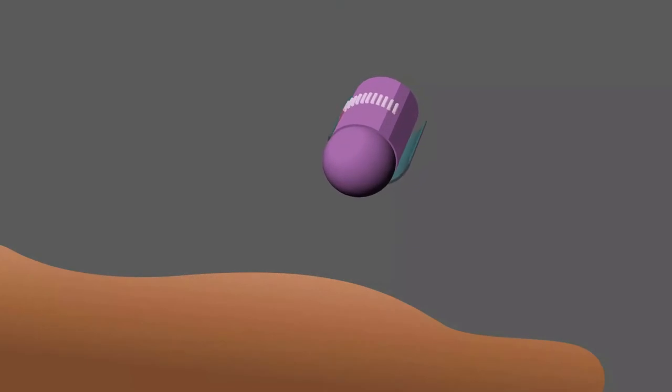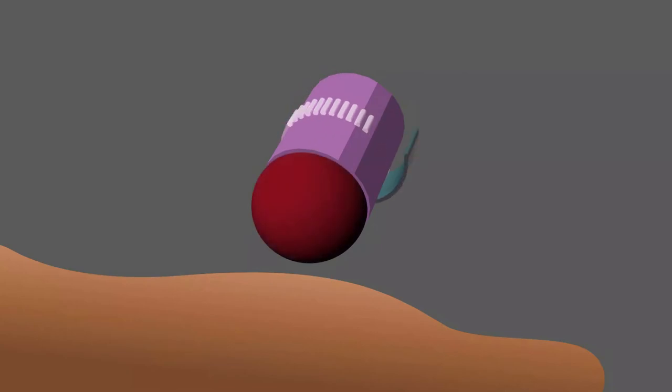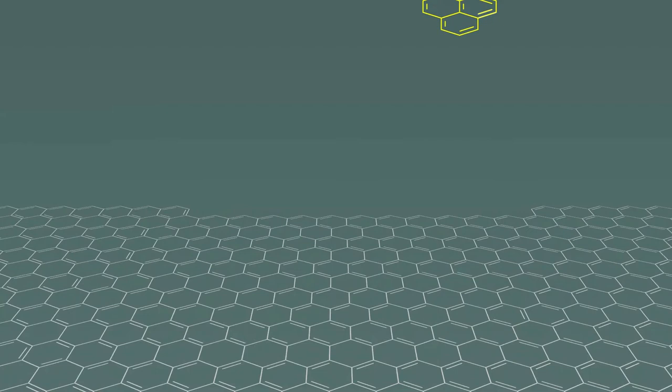Nanorobots may one day work inside our bodies to detect and destroy tumors, or float through our bloodstream to clear blood clots. All of these things are part of nanotechnology, so how is it different than chemistry?